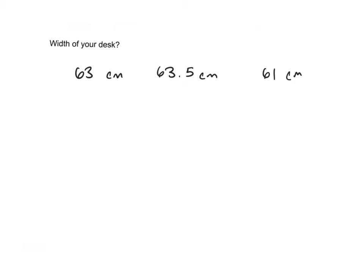You might be asking yourself, how could all these different people get three different answers? It comes down to the simple fact that humans make measuring errors — it's just a limitation of the human. Everybody sees the same object a little bit differently, and everybody uses the instrument a little bit differently. So, as scientists, we ask ourselves: what can we do to eliminate that variability in the measurements?